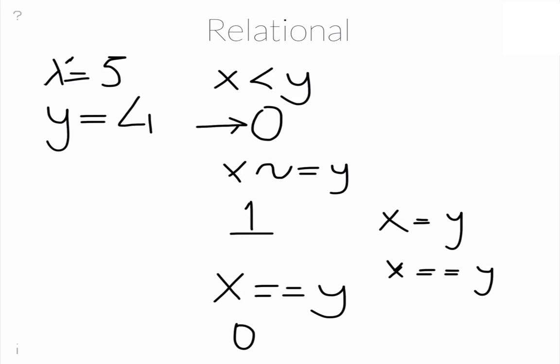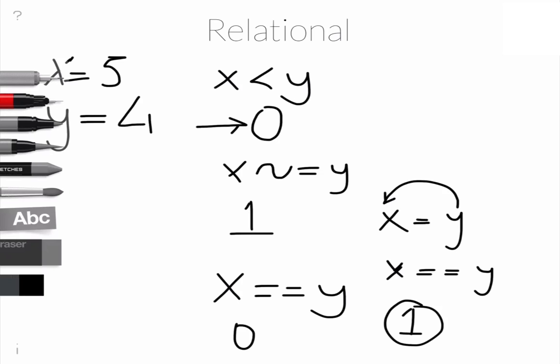So what happens here? The result will be 1, because we just made x equal to y by assigning y's value to x and we basically compared y with y. Obviously the result is going to be 1.